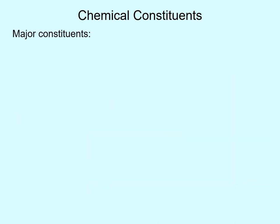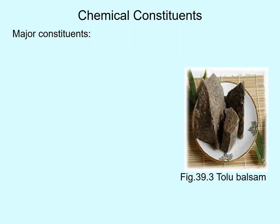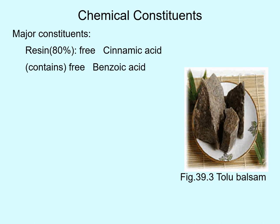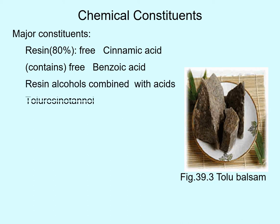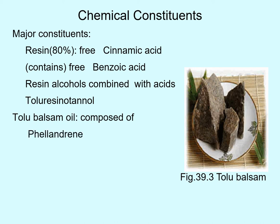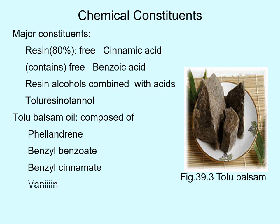The chemical constituents of this drug: the major constituents are balsamic resins — cinnamic acid and benzoic acid — found in about 80% of the total combination. The resin alcohols combined with acids, known as tolu resinotannol, are also found. Tolu balsam oil is composed of phellandrene, benzyl benzoate, and benzyl cinnamate. It also contains vanillin and eugenol.